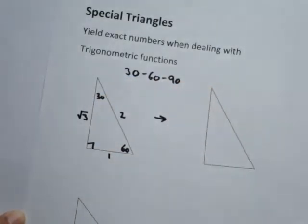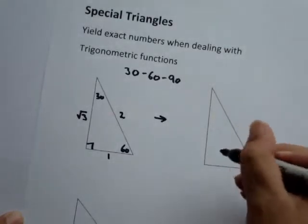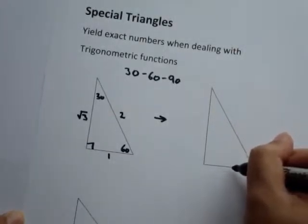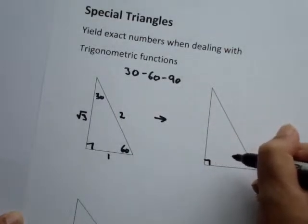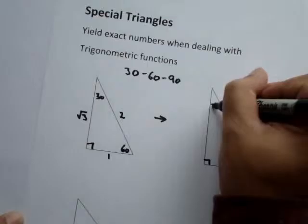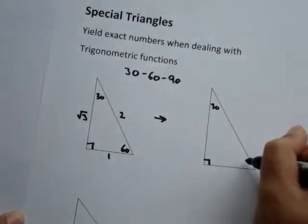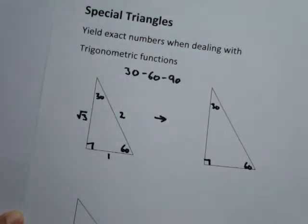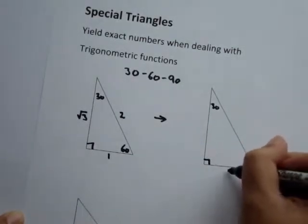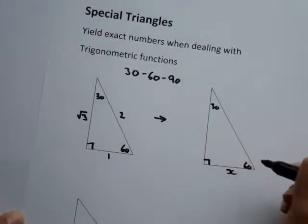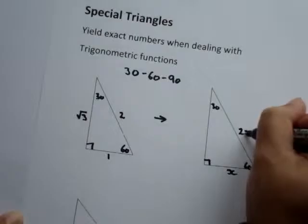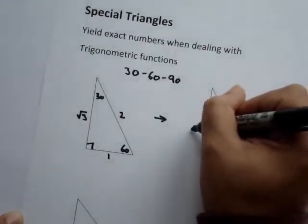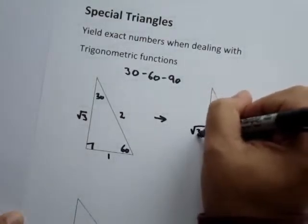If we translate this to a generic version: for a right angle triangle with angles 30, 60, and 90, if we have this side as X, then the hypotenuse would be 2X, and the remaining side would be the square root of 3 times X.